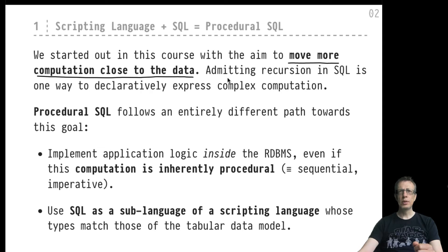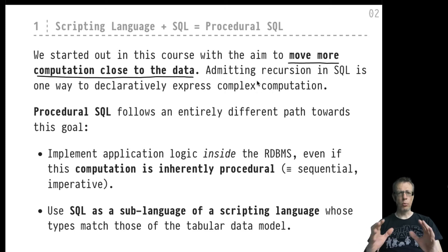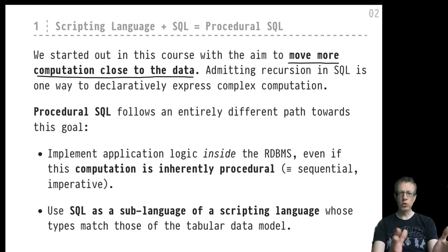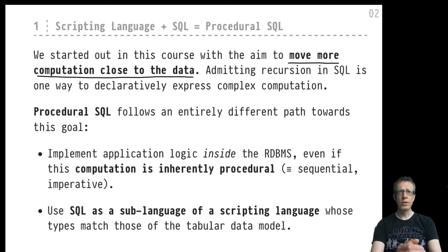Recursion has been a key construct in our discussion of SQL — a key construct that allows us to express actually any computation in terms of SQL. Admittedly, the expression of recursion and formulating complex computation in terms of recursion in SQL can sometimes be rather unusual, or people would say it can turn out awkward. There are different approaches to complex computation, and procedural SQL constitutes one such different path towards the goal of moving complex algorithms closer to the data.